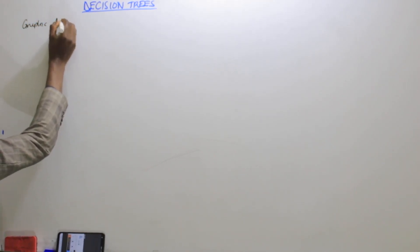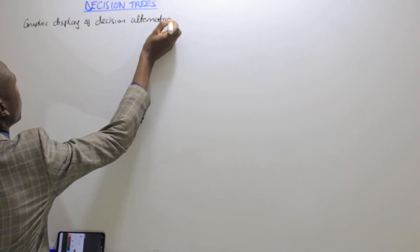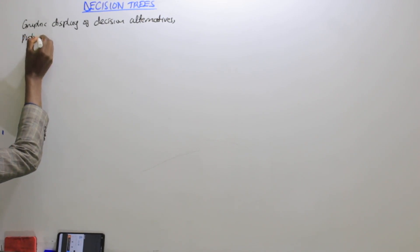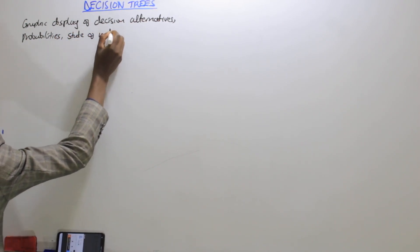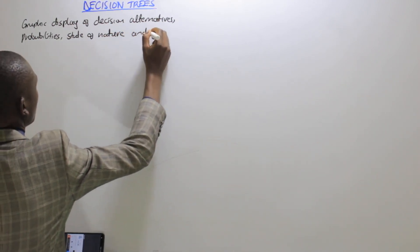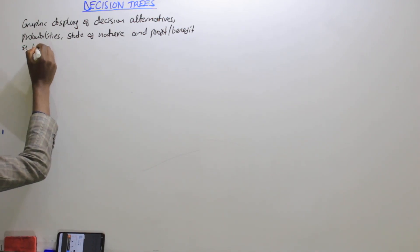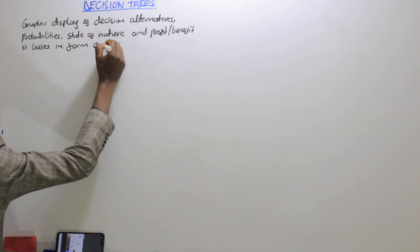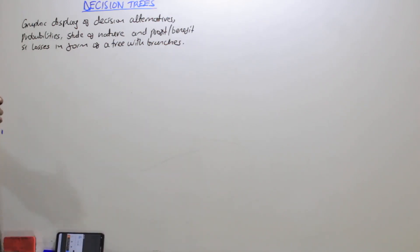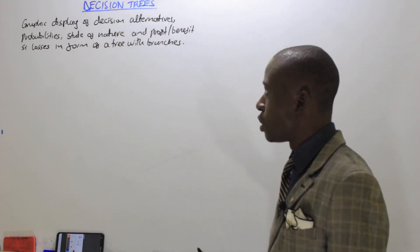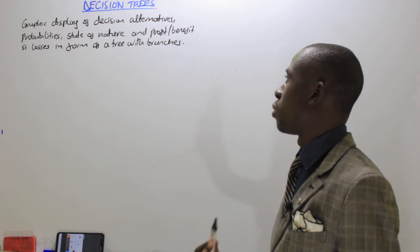It is a graphical display of decision alternatives, probabilities, states of nature, and aspects of profits, benefits, and losses in the form of a tree with branches. That's the main element you should always understand when dealing with a decision tree — it's just a graphical display of our decision alternatives, probabilities, states of nature, and profits, benefits, and losses in the form of a tree with branches.